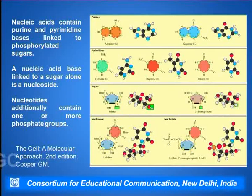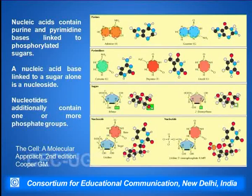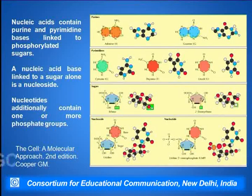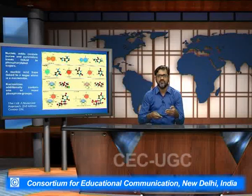These nucleotides additionally contain one or more phosphate groups. We can see the structure where the various nucleotides are being shown. Adenine is one of the nucleotides, thymine is another, and then guanine and cytosine. These are the four nucleotides which fall under the purine or pyrimidine classification and they form in a base pairing rule way.